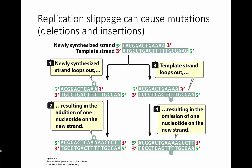Another thing that can happen is called replication slippage. If there are repetitive DNA sequences, it's possible for one of the strands to actually loop out. In this figure, the top strand is the newly synthesized strand and the bottom strand is the template. If the newly synthesized strand loops out, it's still able to base pair correctly because of that repetitive sequence, and DNA synthesis continues, resulting in an insertion of a base.